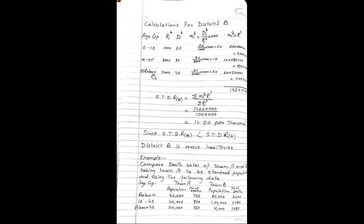Next age group is 55 and above: total population is 2000, number of deaths are 40. Mortality rate is 40 upon 2000 into 1000, which is equal to 20. MIB into PIS: 20 into 2,20,000 becomes 44 lakhs. Total of last column is 1,42,00,000 divided by total standard population of 1,00,00,000, giving STDR for District B as 14.20 per 1000. Since STDR for District B is less than STDR for District A, District B is healthier than District A.